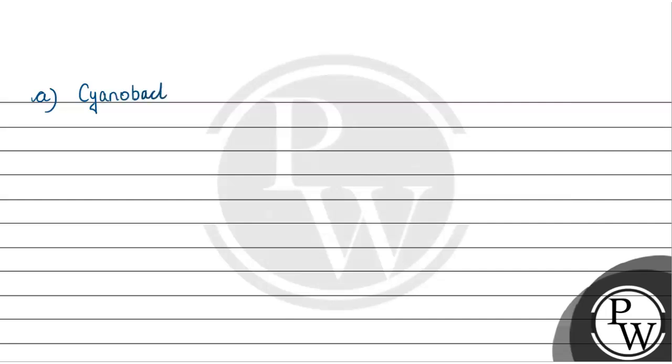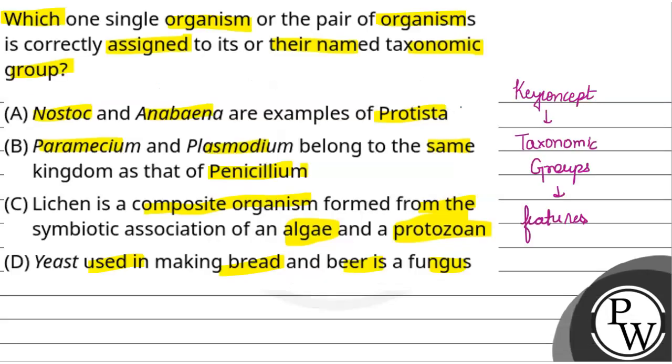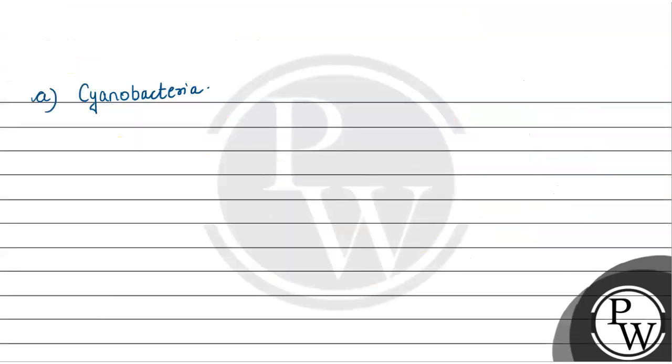Now for Option B, Paramecium and Plasmodium belong to the same kingdom as Penicillium? Paramecium is a ciliated protozoa.